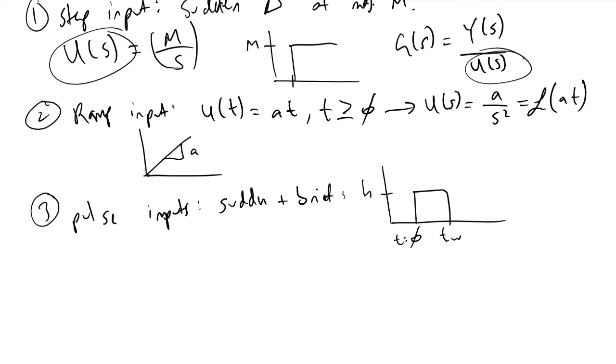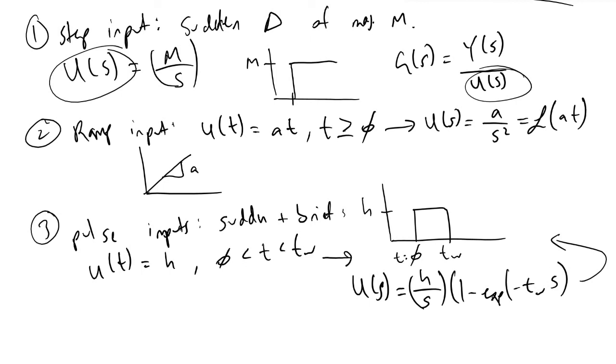In the time domain, U(t) is equivalent to H when zero is less than t is less than t_W. In the frequency domain, when we take the Laplace transform of that, we find that U(s) is equal to H over s times (1 - e^(-t_W*s)). If we wanted to analyze how our transfer function will depend on a pulse input, we would plug this value into G(s), like so.